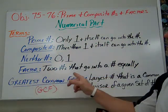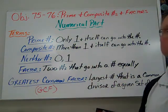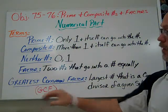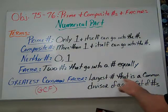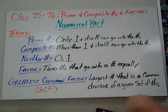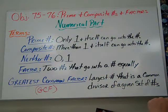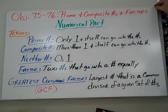Factor: two numbers that go into a number equally, and we'll talk about those as we go through this. Greatest common factor, also known as GCF, this is the largest number that is a common divisor, meaning it divides into it, of a given set of numbers. So those are the terms that we're going to talk about and use within our examples today.